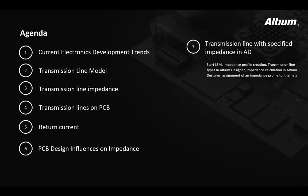We're going to talk about current electronics development trends. We're going to introduce a simple concept of the transmission line model. We're going to discuss the impedance of the transmission line, how transmission lines are either intentionally or inadvertently manifest on printed circuit boards. We're going to follow that with a discussion of a very important topic called return current. Then we're going to review the PCB design rules and how they influence impedance. And then after that, I'm going to just go through the step-by-step in presentation form of how you use Altium Designer to do impedance controlled routing and to cope with that design challenge.